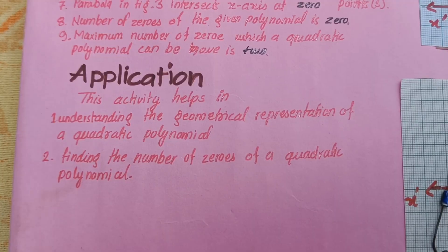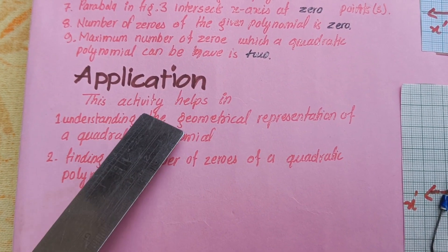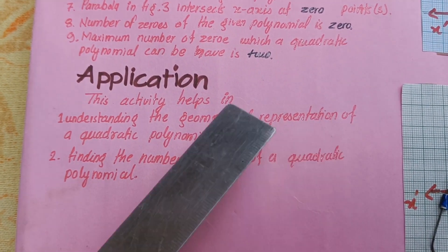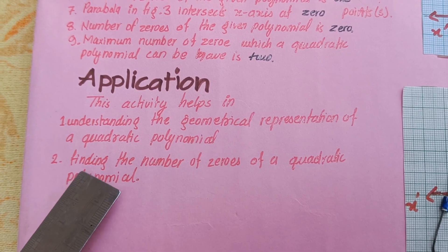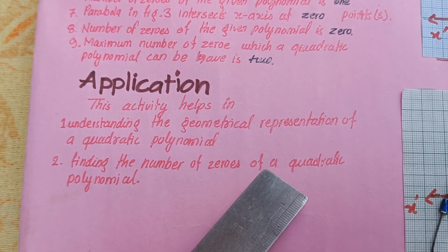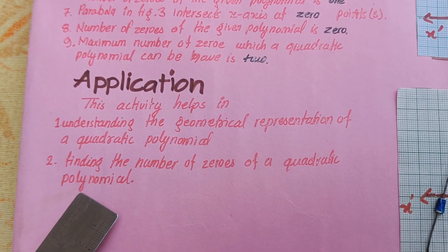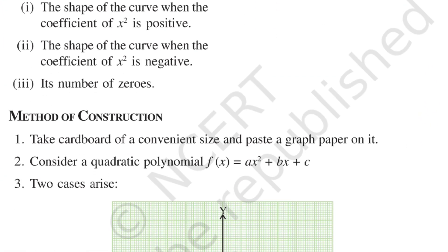This activity helps in understanding the geometrical representation of a quadratic polynomial and finding the number of zeros of a quadratic polynomial.